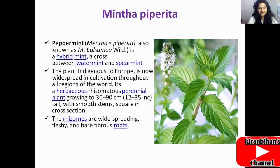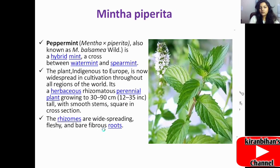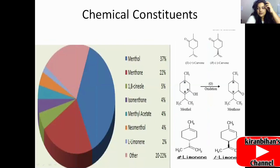The plant is indigenous to Europe — its habitat is Europe — but it is now widely cultivated in all regions of the world. It is herbaceous and rhizomatous, a perennial plant. The rhizomes are widely spreading, fleshy, and bear fibrous roots. Now let's look at the chemical constituents of Mentha piperita.